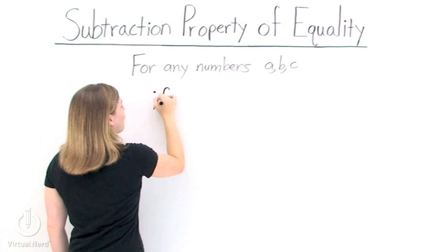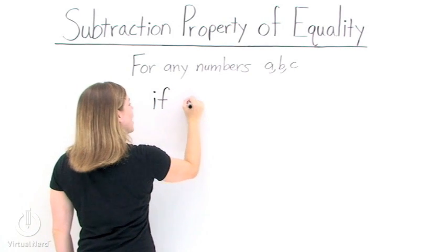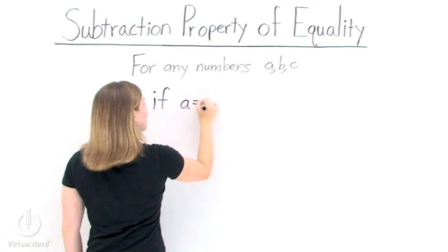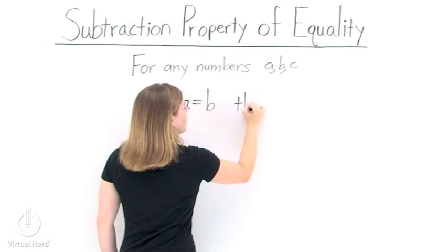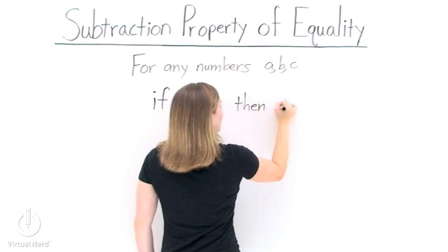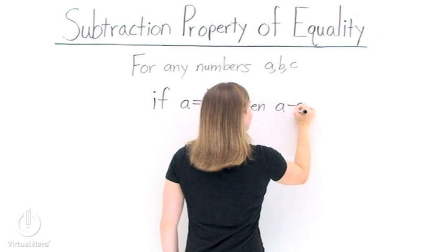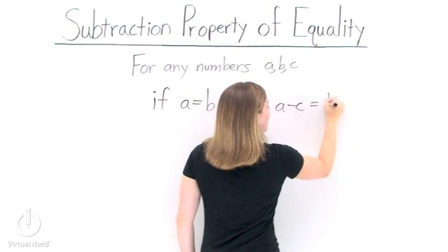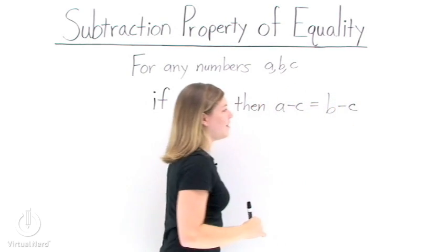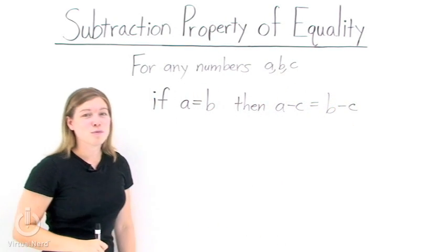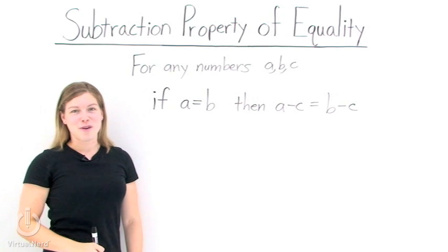In other words, if we have any numbers a, b, and c, if a is equal to b, then a minus c is equal to b minus c. That is the subtraction property of equality.